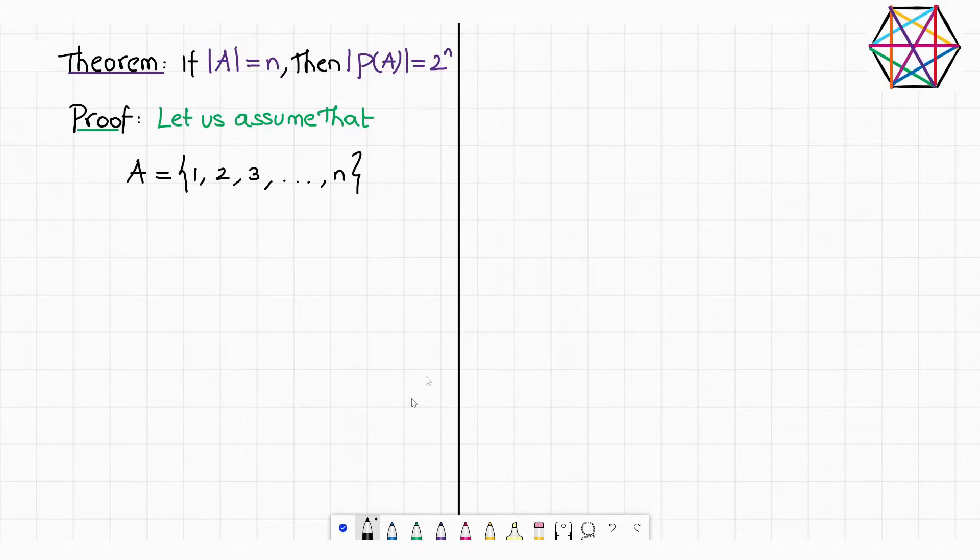Another point to be noted is that in a set, the elements can be written in any order. Now we are going to count how many different ways a subset can be chosen from this given set. Let me make this task even simpler. Forget about sets, subsets, power sets, and everything we have discussed so far. Look at it this way.